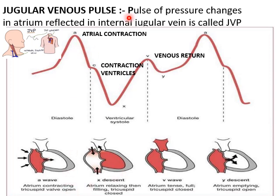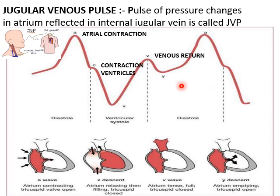The jugular venous pulse (JVP) is the pulse of pressure changes in the right atrium reflected in the internal jugular vein. On examination, we see the jugular vein just lateral to the sternocleidomastoid. When the subject reclines at 45 degrees, we can see the JVP, measure its pressure, and observe the waves. There are three ascent waves: the A wave, the C wave, and the V wave.